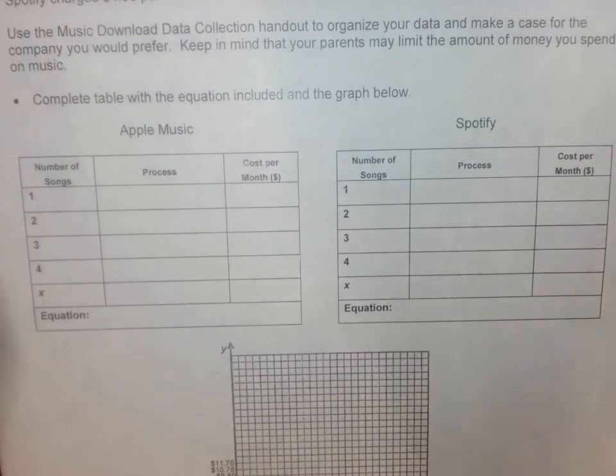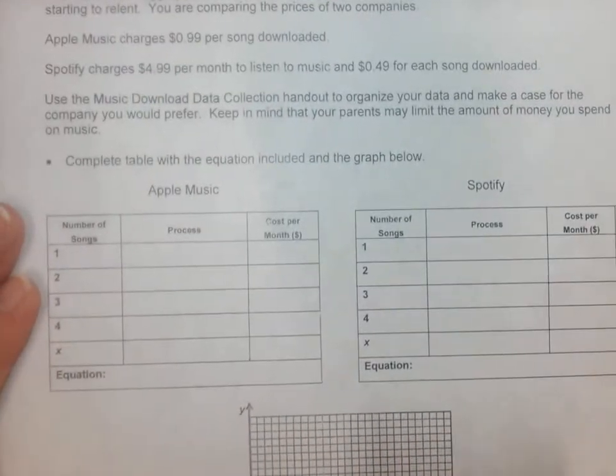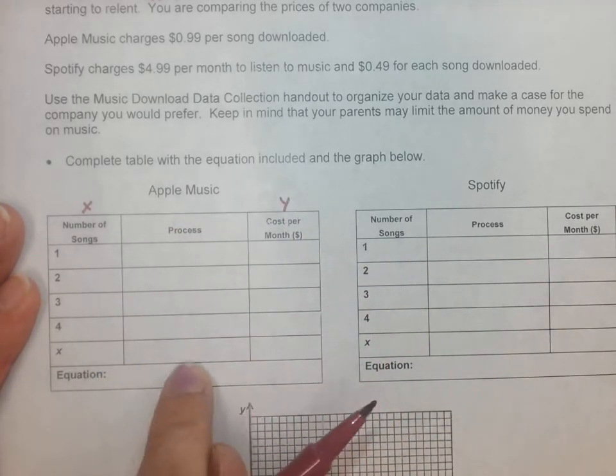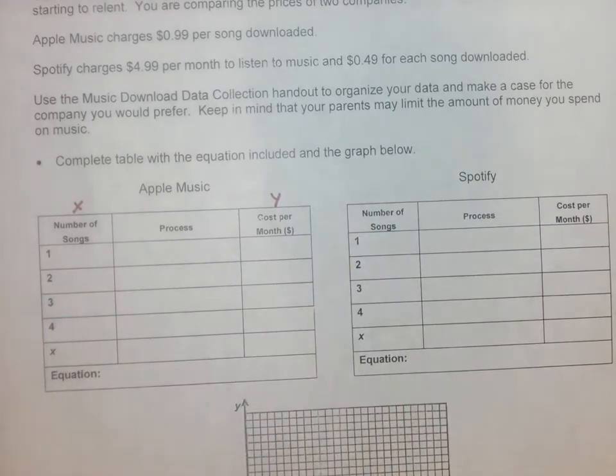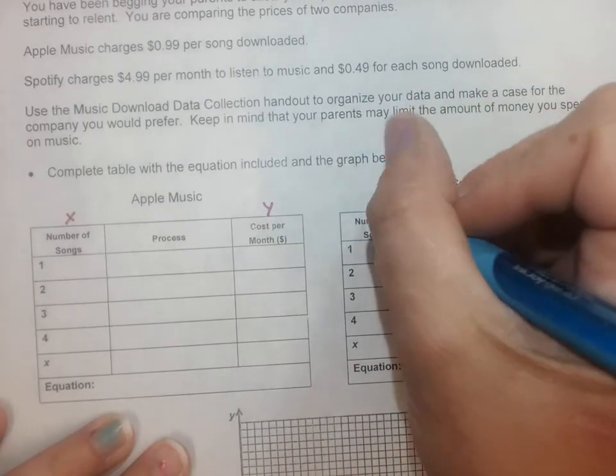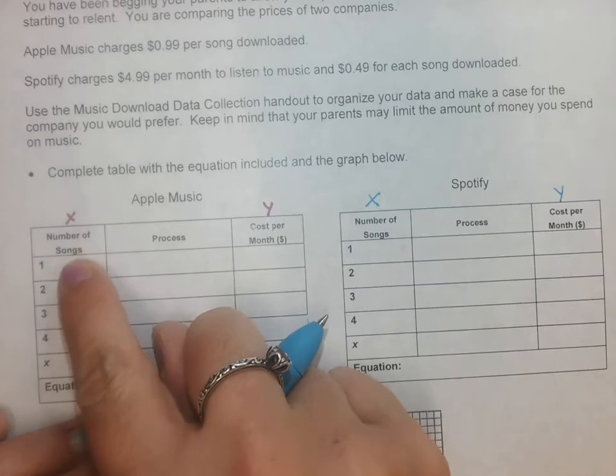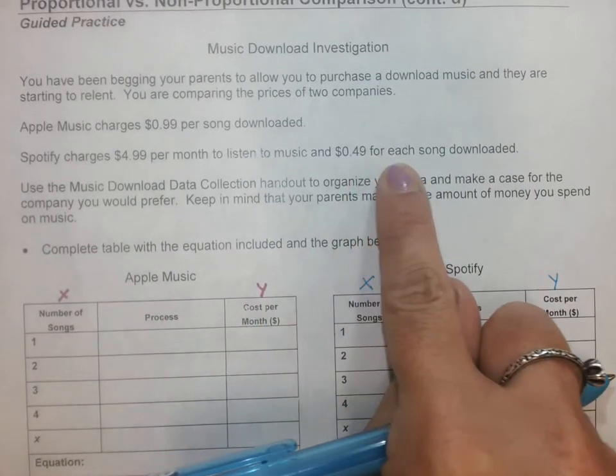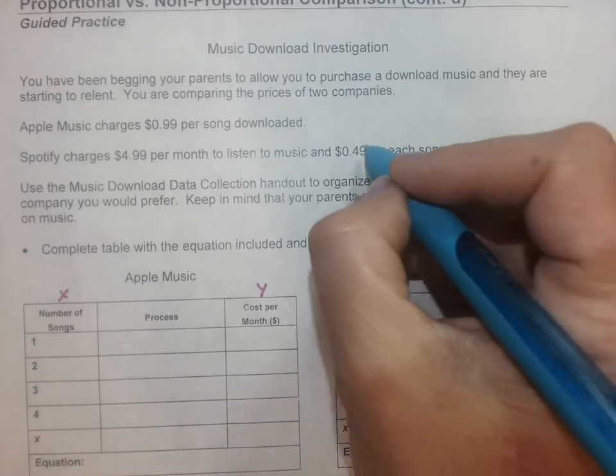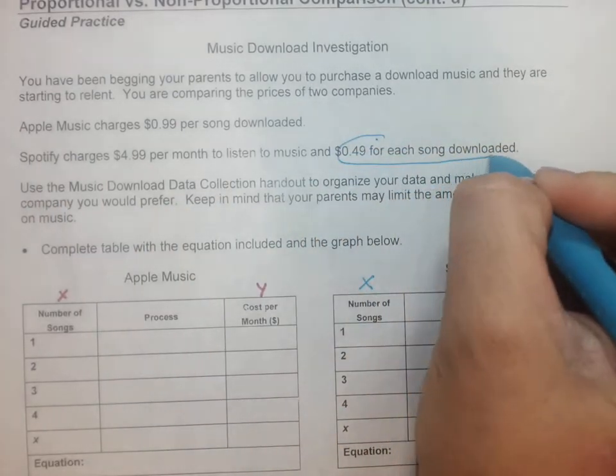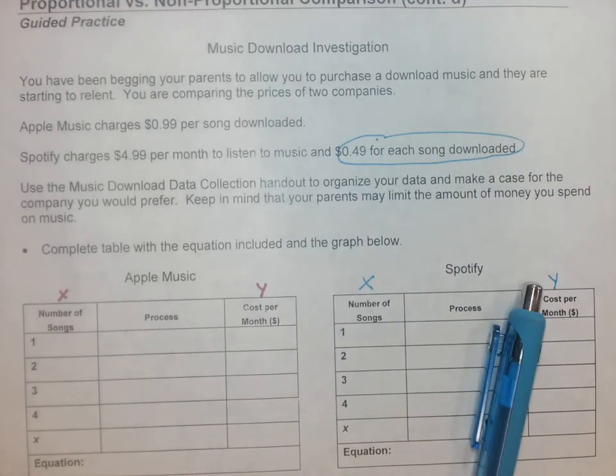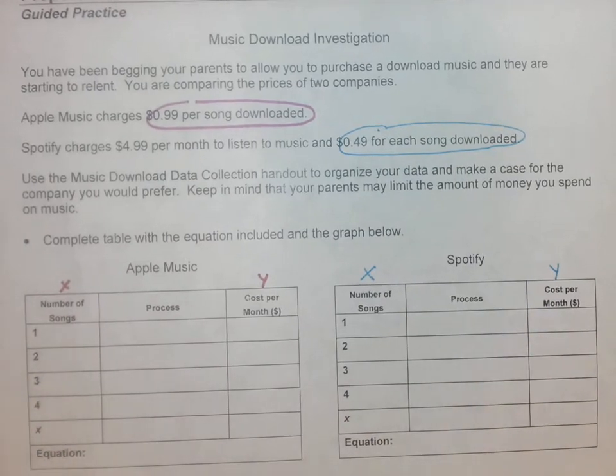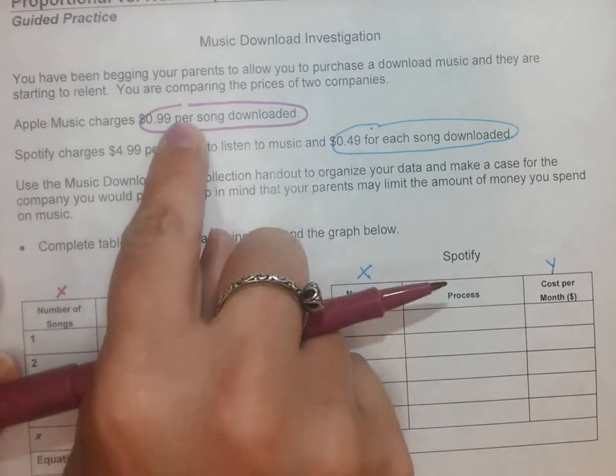We'll complete the table and the graph. I'm looking at what my x and y would be. Remember, this middle column is my thought process column. So my x and my y. What is x? X is the number of songs. So 49 cents per song, and then 99 cents per song.